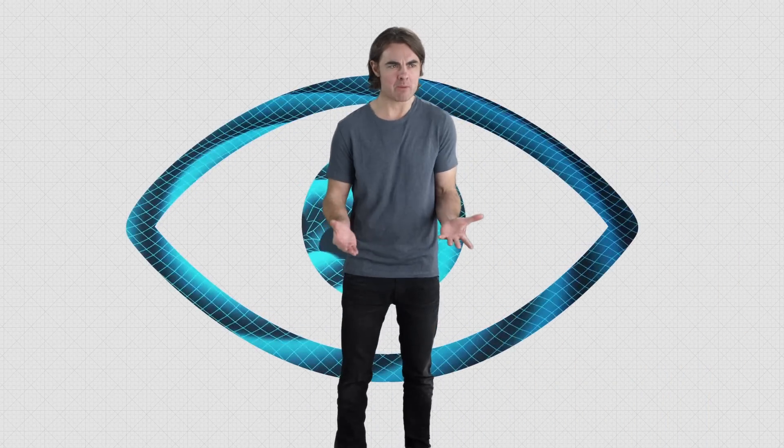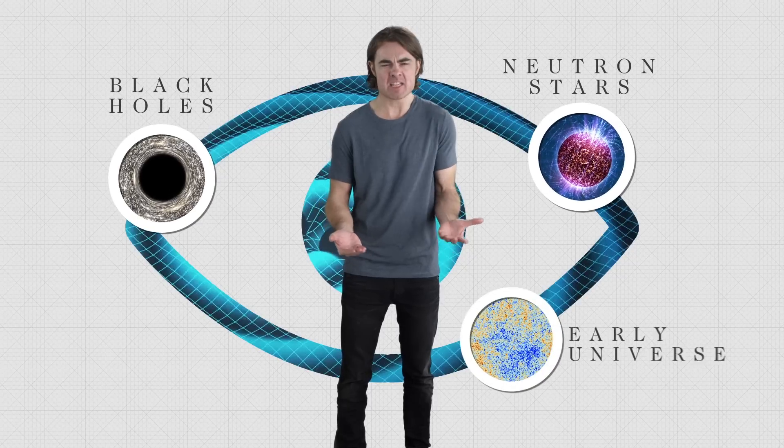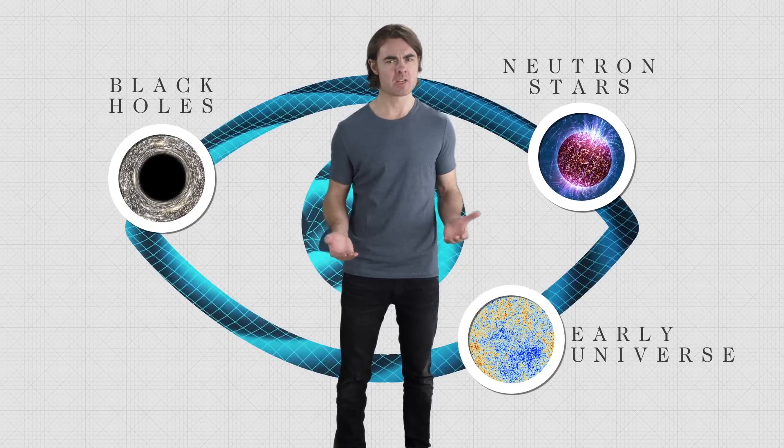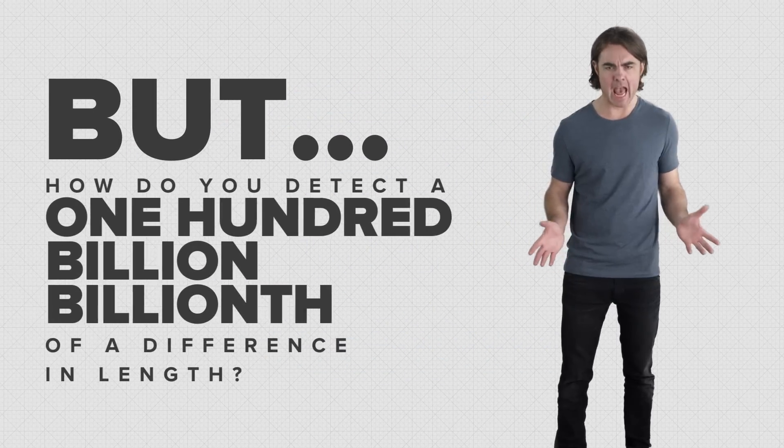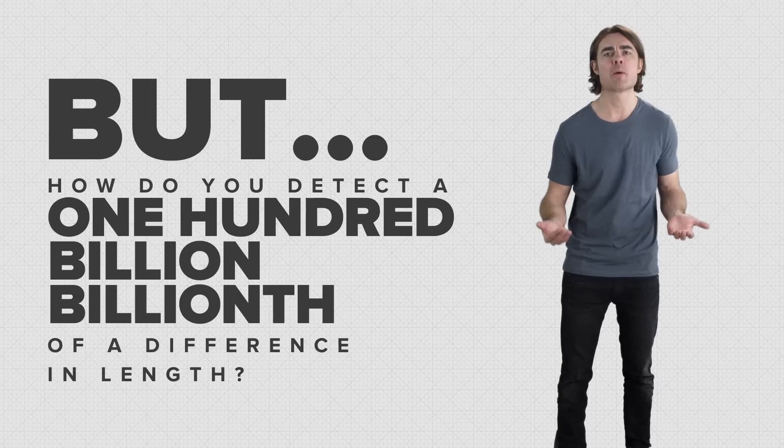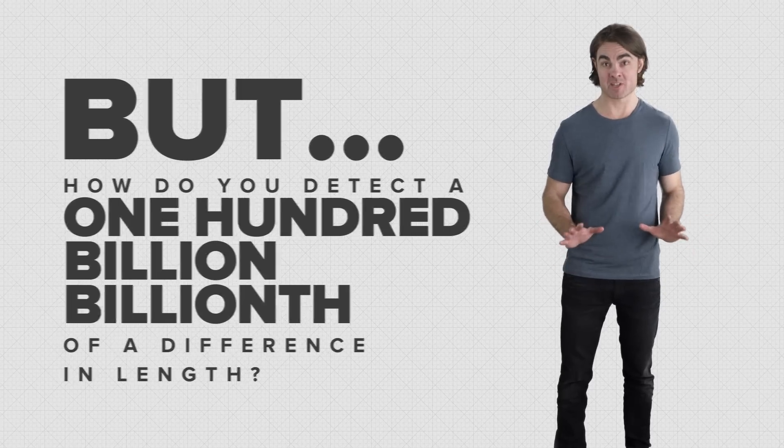But if we could actually see G waves, we'd be able to study black holes, neutron stars, even the extremely early universe in ways never before possible. It would be a monumental scientific discovery. But how do you detect a 100 billion billionth of a difference in length?